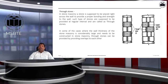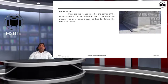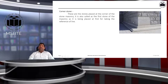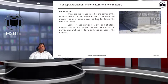Corner stones are the stones placed at the corner of stone masonry. They are also called the first stone of masonry, as they are placed first to take the reference line for the rest of the construction. Corner stones should be of proper size and shape so they provide proper alignment and good strength to the masonry.